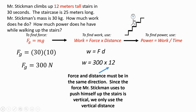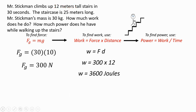We only count the distance that's in the direction of the force. So he's pushing himself up. And so we use the 12 meters because that's how far he's going to push himself up. The 300 times 12 is 3,600 joules.